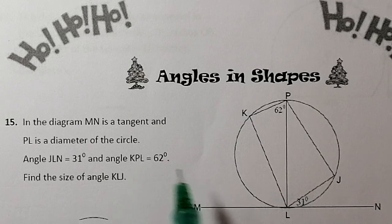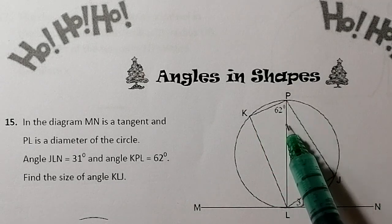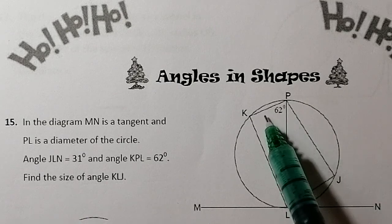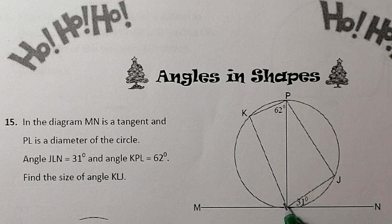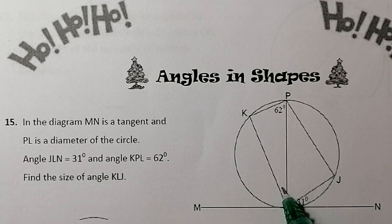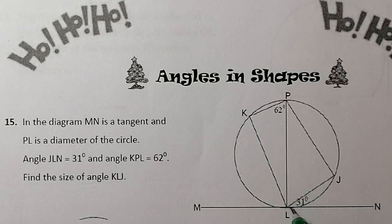And angle KPL — starting at K, going to P, then to L — that angle is 62 degrees. What we've got to do is find the size of angle KLJ — from there to there to there. So it's a double angle, and we're going to have to work out two angles and add them together to find that KLJ angle.